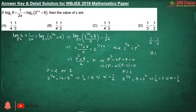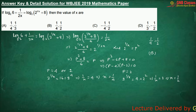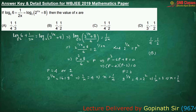Hence, option B is the correct one. Again, this is a very normal sum — no complexity is involved in it. Let us move to the next problem.